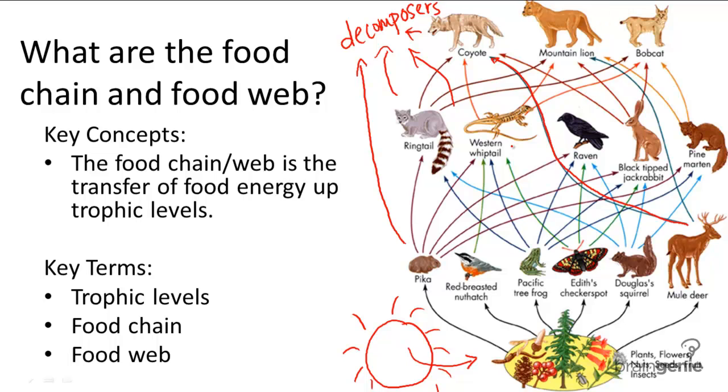The last thing to note is that the two examples of the food chain and food web that I showed you are both terrestrial examples. But there are also marine food chains and food webs that are separate from these.